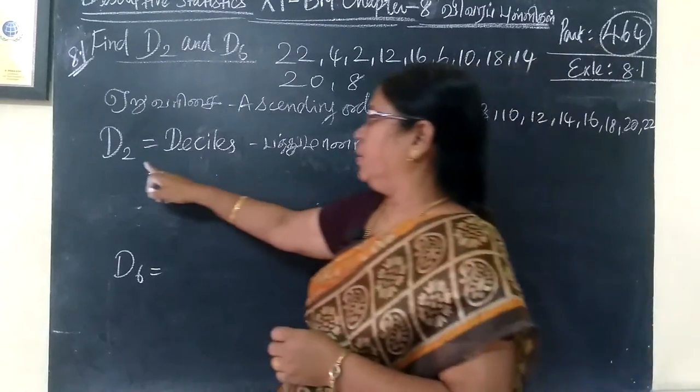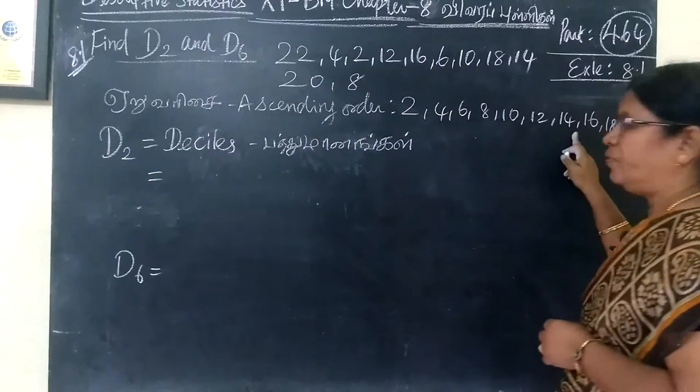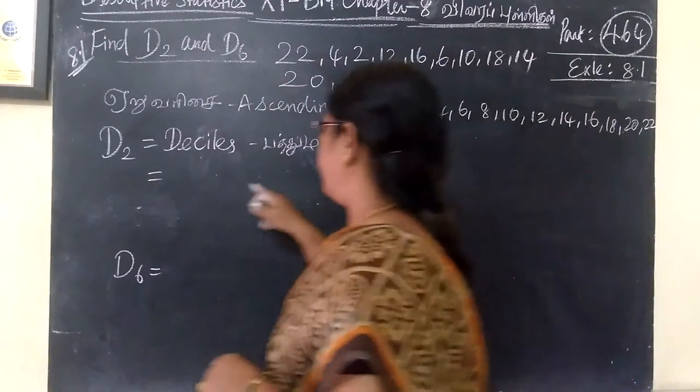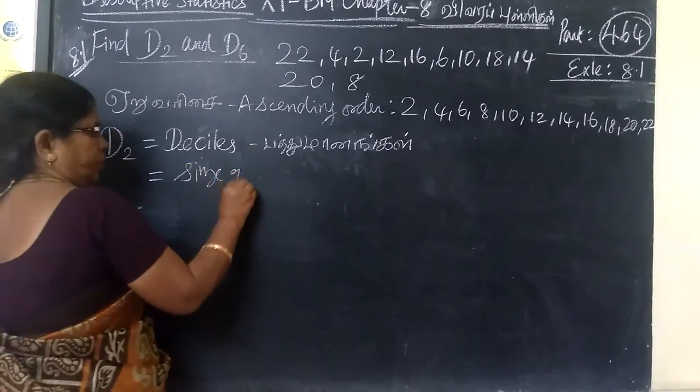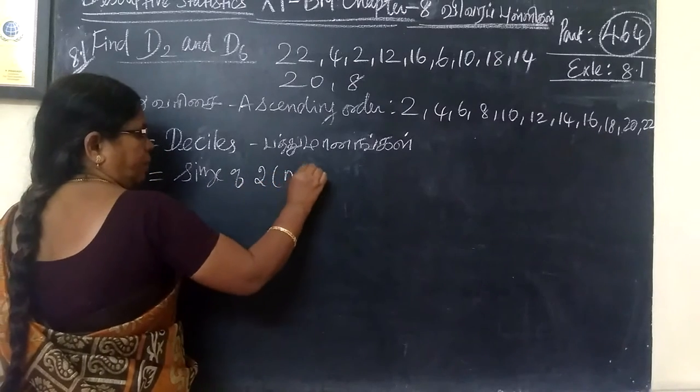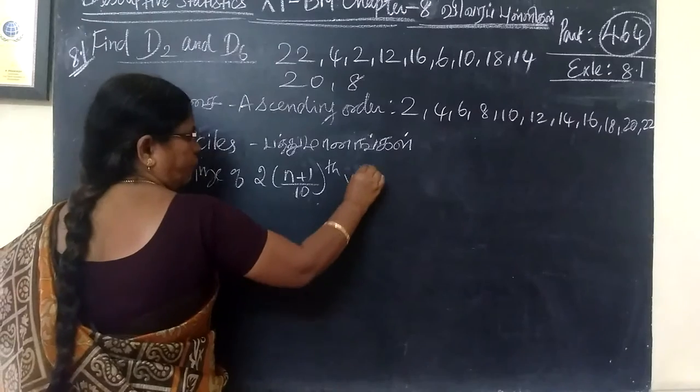Then, the data we write in ascending order. D2 is the size of, in this case, it will be N plus 1 by 10th value. This is the formula.